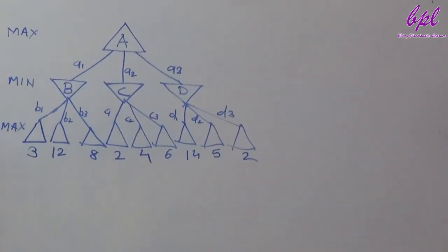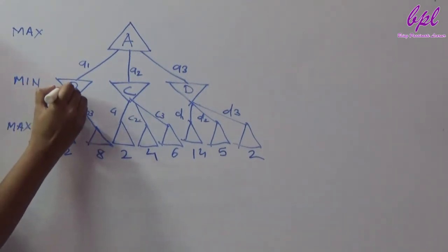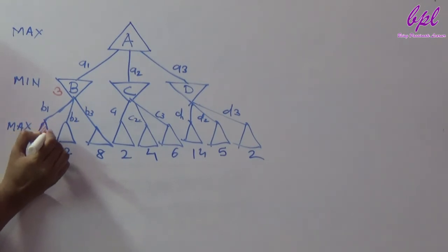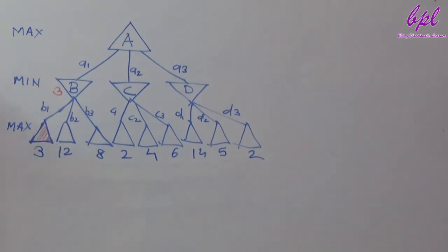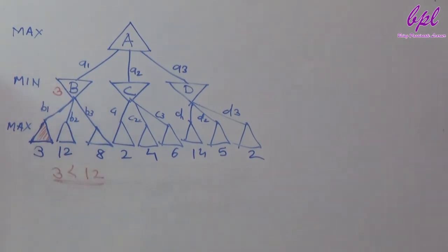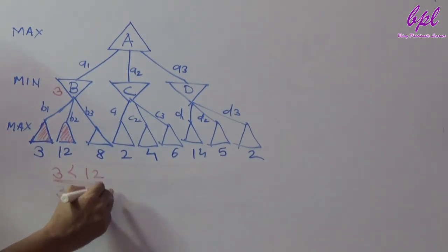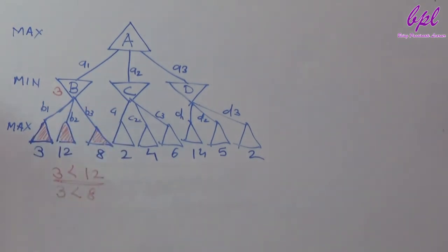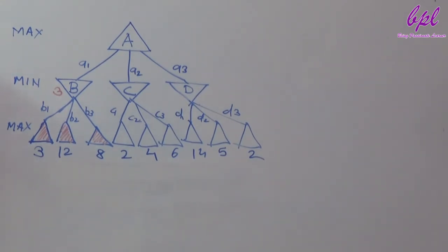The minimax algorithm calculates the minimax value for all nodes following depth-first exploration. So the minimax algorithm first explores all the children of node b. The node with utility value 3 will be explored first and the value 3 will be considered as b's minimax value. Next, node with utility value 12 will be explored. As b is a min node, b's minimax value will be the minimum of 3 and 12. Next, node with utility value 8 will be explored. Since b is a minimum node it will select the minimum value from 3 and 8, so b's minimax value will be 3.